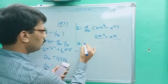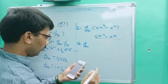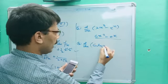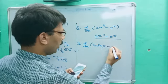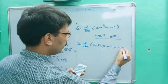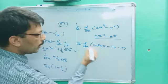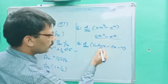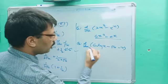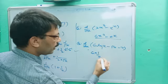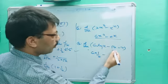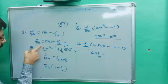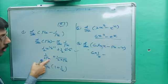Third question: d/dx of 6 log x minus root x minus 7. Very easy. We split it as d/dx of 6 log x, minus d/dx of root x, minus d/dx of 7. So we get 6 into 1/x for the log term, and for root x the power is 1/2.